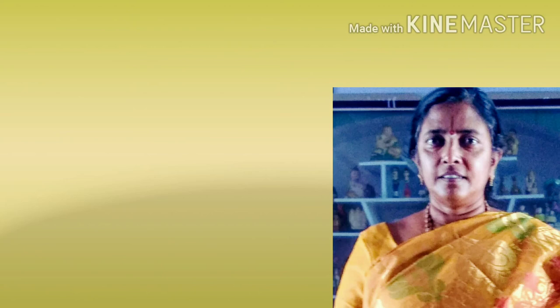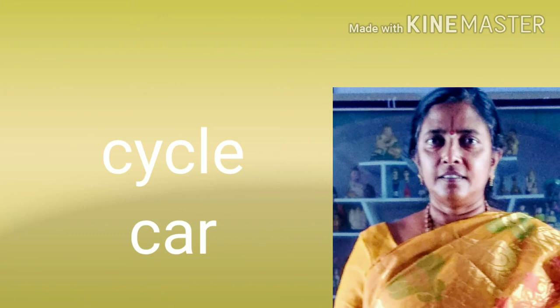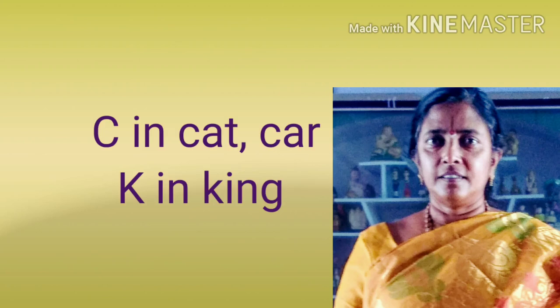The same is applicable in the case of consonants. In the word 'cycle', the letter C is used two times but is not pronounced the same way — first it sounds 'S' and second it sounds 'K'. Also, C in cat and K in king are two different letters that give the same 'K' sound.